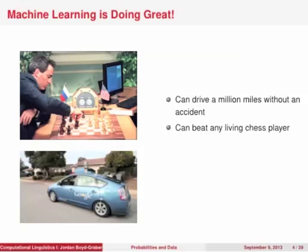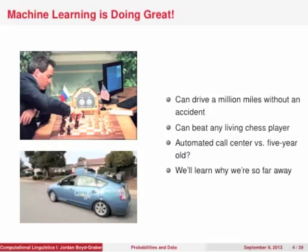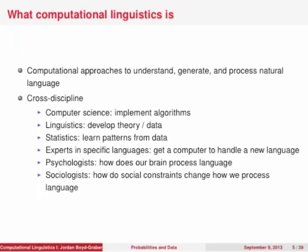What's Computational Linguistics? If you look at what machine learning is doing, we have cars that can drive a million miles without an accident and without a driver. We have algorithms that can beat any living chess player. But compared with that, if you call an automated call center and compare that to a conversation with a five-year-old child, you'd almost certainly prefer the five-year-old. So why is conversing in natural language so much harder than these other machine learning problems? Computational Linguistics is an attempt to get machines and computers to understand, generate, and process natural language.